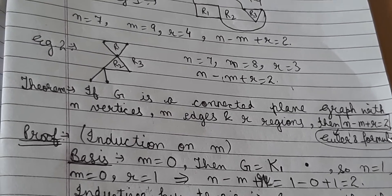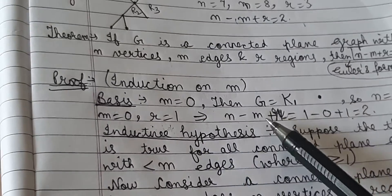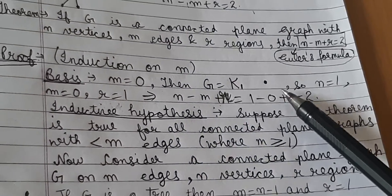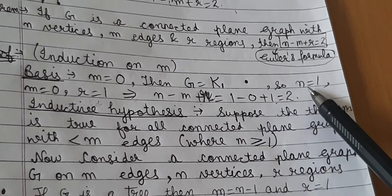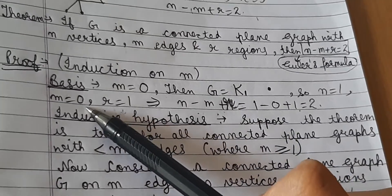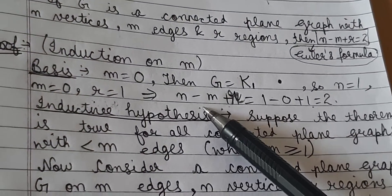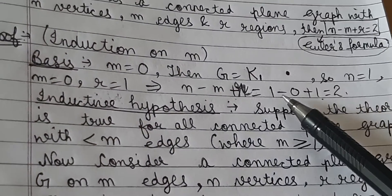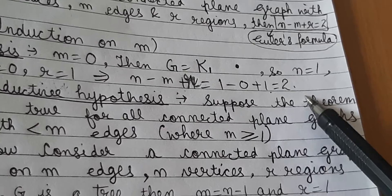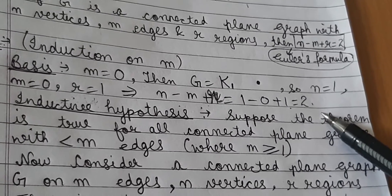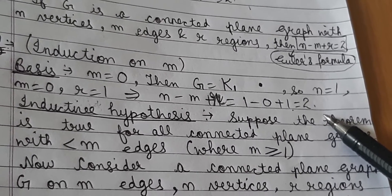The proof will use induction on m, the number of edges. The base case: when m equals 0, then G equals K1, an isolated vertex, so n equals 1, m is 0, and number of regions is 1, which implies n minus m plus r equals 1 minus 0 plus 1 equals 2. So the base case is done.